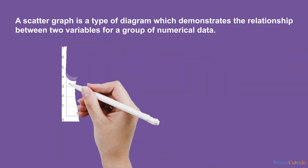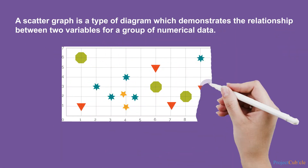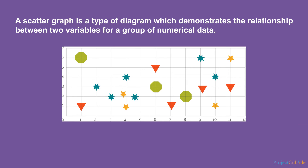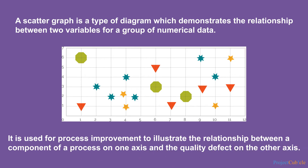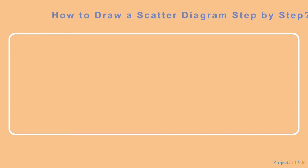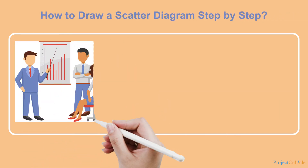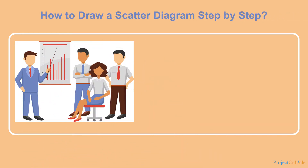A scatter graph is a type of diagram which demonstrates the relationship between two variables for a group of numerical data. It is used for process improvement to illustrate the relationship between a component of a process on one axis and the quality defect on the other axis.